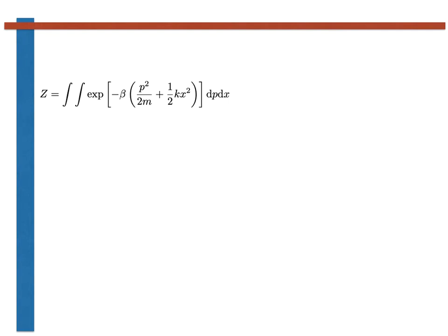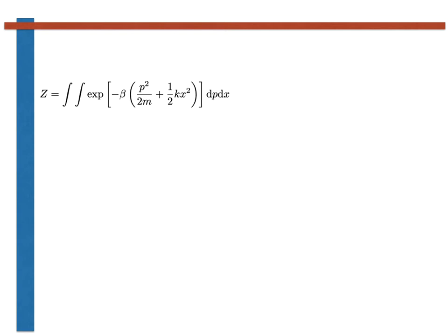We can insert the Hamiltonian we just arrived at into our now hopefully familiar expression for the canonical partition function as shown here. We must integrate over the two degrees of freedom, the position and momentum coordinates, when calculating this partition function. This is straightforward, however, as classical Hamiltonians are separable and we can thus do our normal trick of writing the exponential of the sum as a product of two exponentials. We can then write the 2D integral as a product of two 1D integrals as shown here.